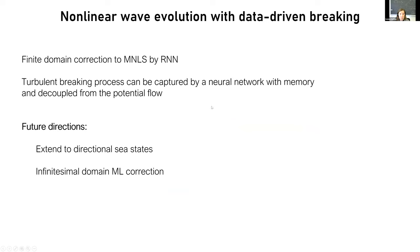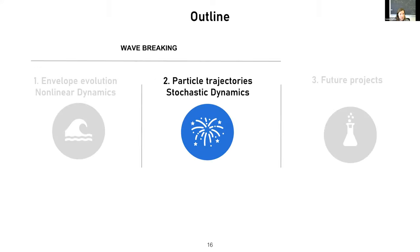In summary, we created this finite domain correction to the MNLS because we take a finite number of steps before correcting. In this way, this turbulent process can be captured because of the memory in the neural network, and it can be decoupled from the potential flow. Future directions would be to extend to directional sea states, and also to have an infinitesimal correction with every step of the solver. For this, you need correct phase information, which we did not have for these experiments.